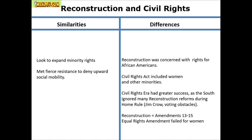Differences: Reconstruction was predominantly for freed slaves, while the Civil Rights Act includes women and other minority groups. The civil rights era has greater success — Reconstruction is debatable: if it was so successful, why would you have Home Rule and Jim Crow? Reconstruction gives us several amendments, whereas the civil rights era attempts an Equal Rights Amendment for women — it fails — though the 24th Amendment ending poll taxes is one you can argue.